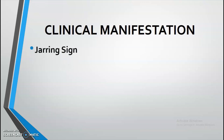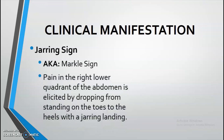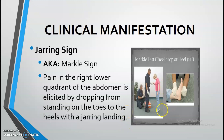Another sign is the Jarring sign, also known as the Markle sign. This is pain in the right lower quadrant elicited by having the patient stand on their toes and then abruptly drop to their heels. You ask the patient to tiptoe and then immediately drop the heel — this will intensify pain in the right lower quadrant.